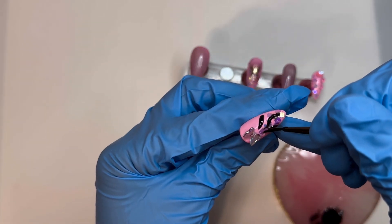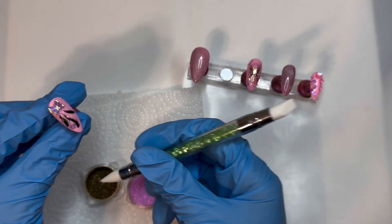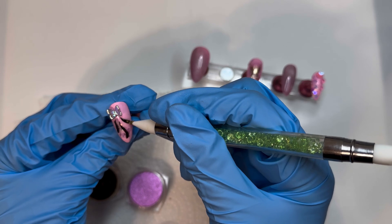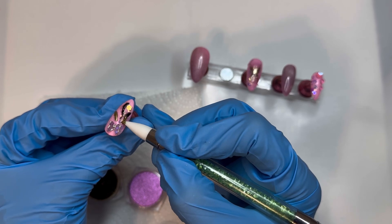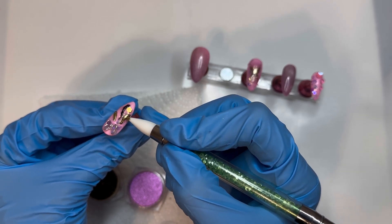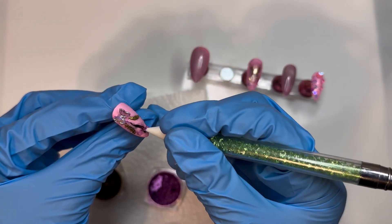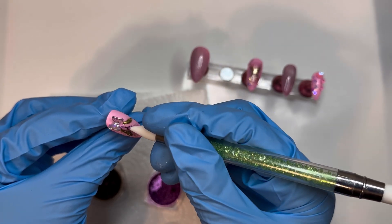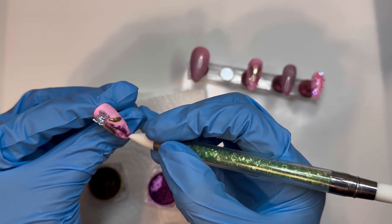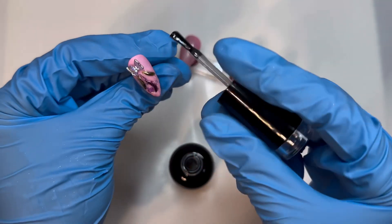I decided to go with these two colors for my chrome and I'm taking my silicone tool and just going over that black part with the chrome powder. To seal this in, I did go ahead and top coat this nail as well.